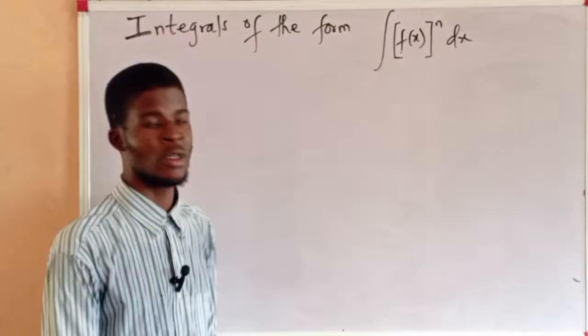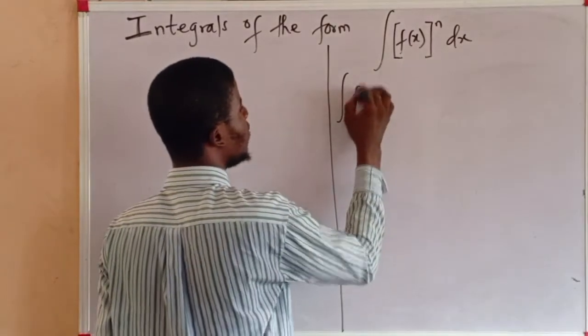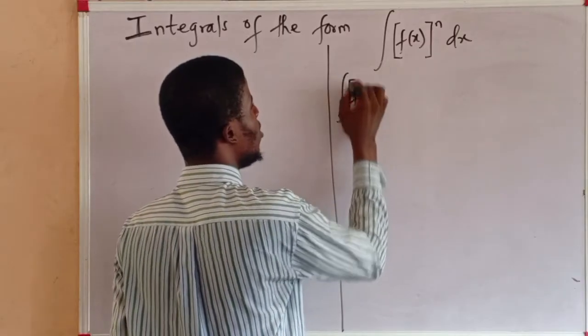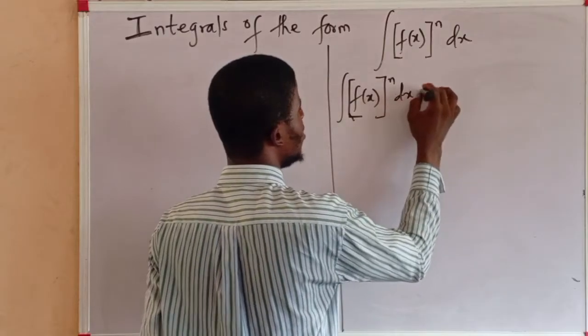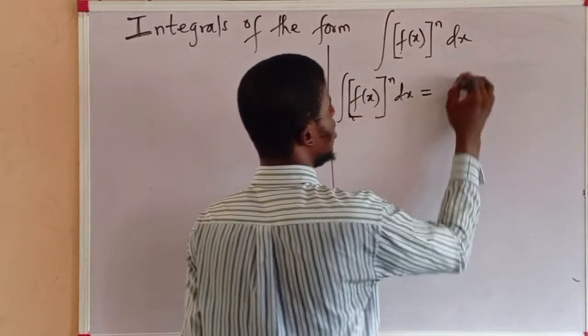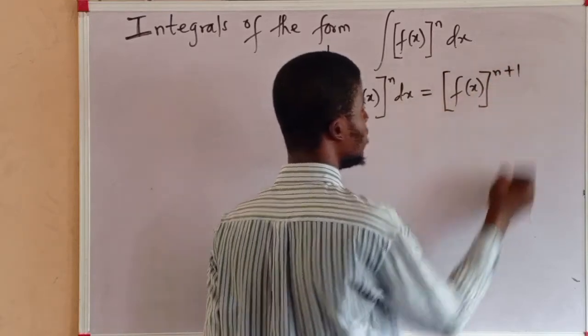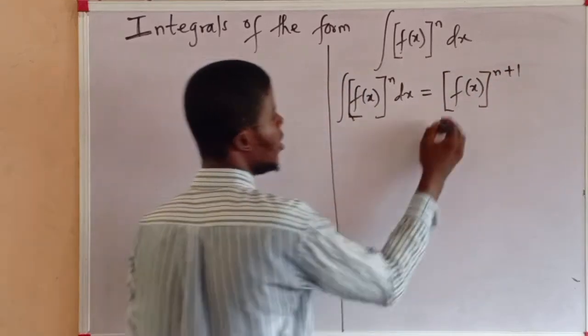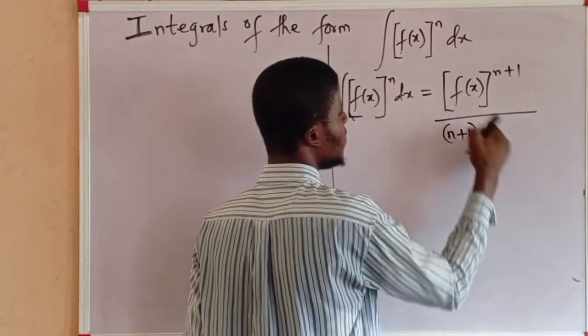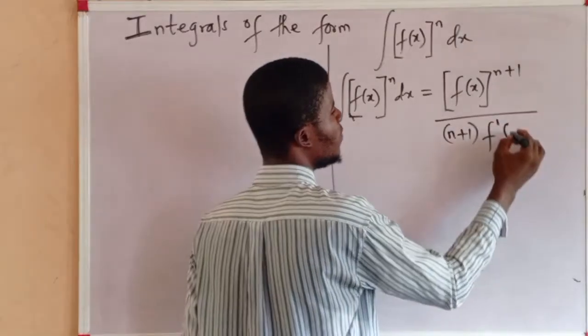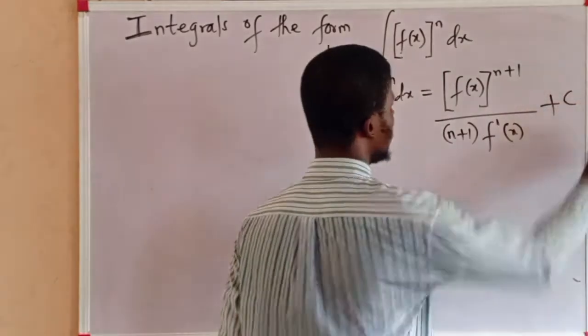This is what the rule says. The integral of f(x) all raised to the power of n dx is equal to f(x) to the power of n plus 1, divided by n plus 1 times the first derivative of f(x) with respect to x, and add the arbitrary constant to it.